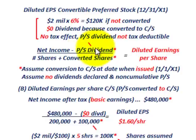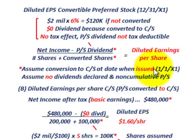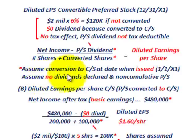Unlike bonds, where we had to add back interest expense on an after-tax basis, with preferred stock there is no tax effect on the dividend. In our example, since the preferred stock was converted into common stock at the beginning of the year, we had zero dividends. We also assumed no dividends were declared and it was non-cumulative preferred stock, so there are no dividends in arrears. The dividend subtraction in the numerator is therefore zero.